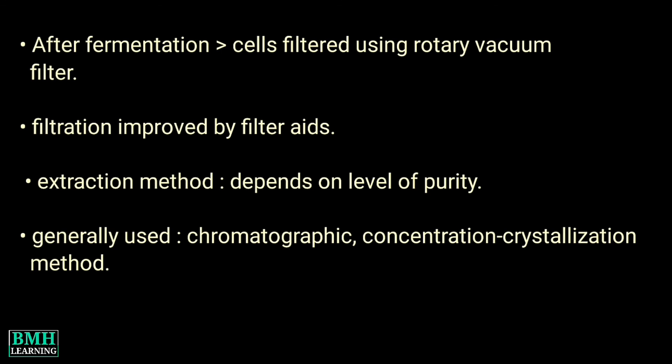Downstream processing: After fermentation, the cells may be filtered using a rotary vacuum filter. Sometimes filtration can be improved by using filter aids. The extraction method of the amino acid from the filtrate depends on the level of purity desired in the product.